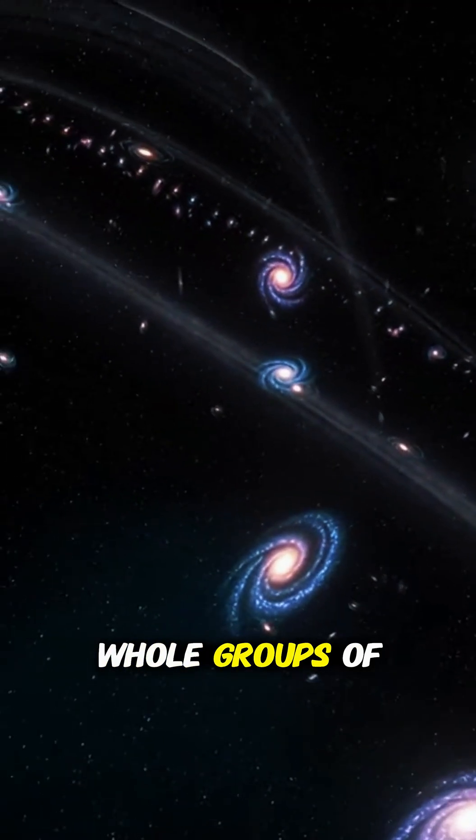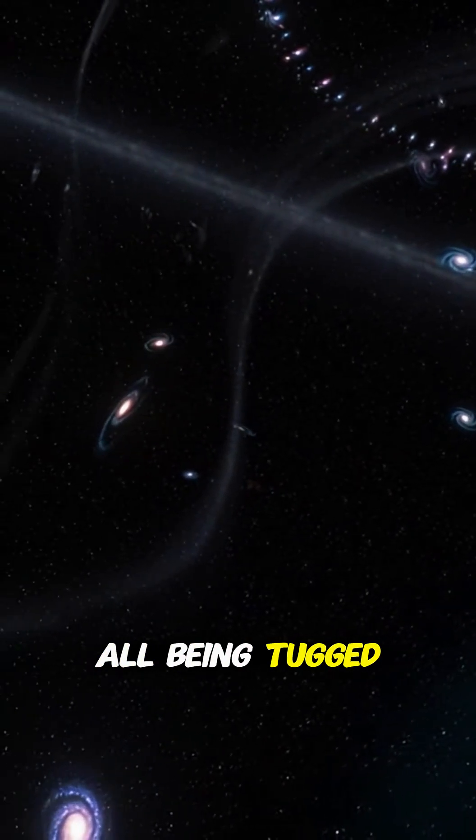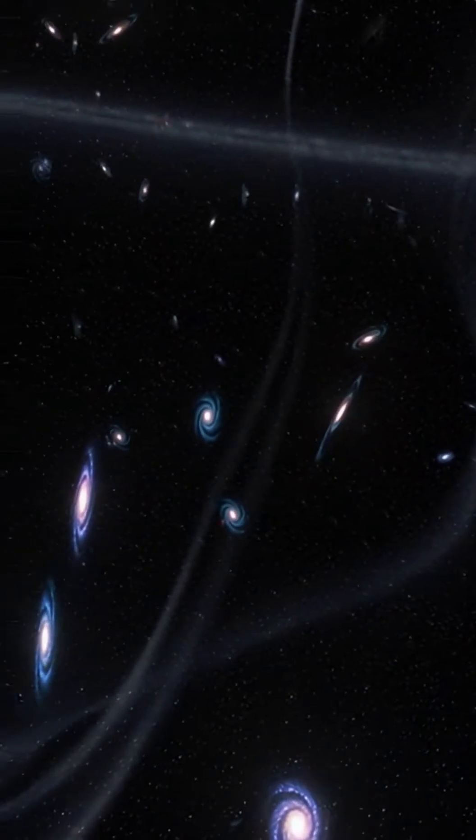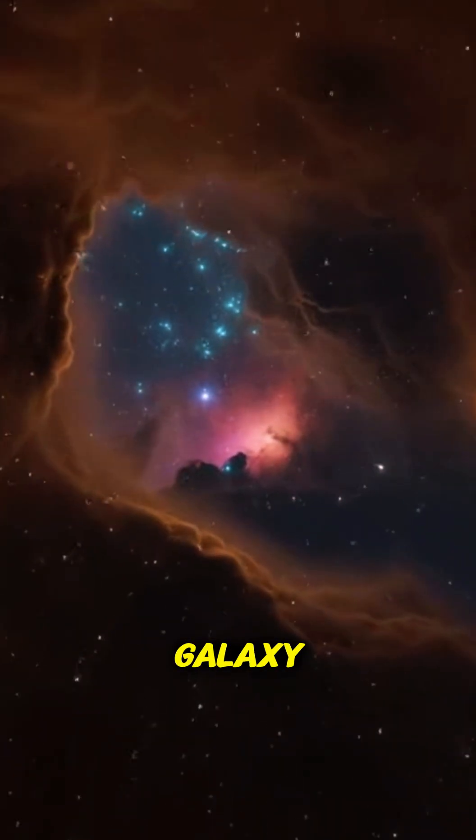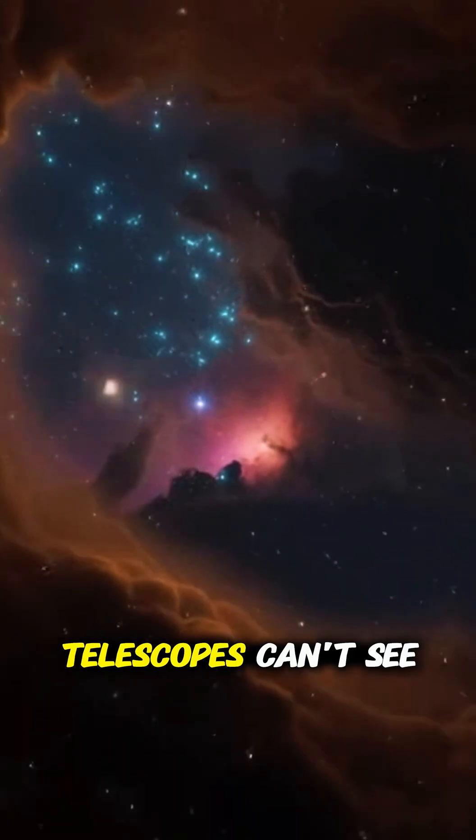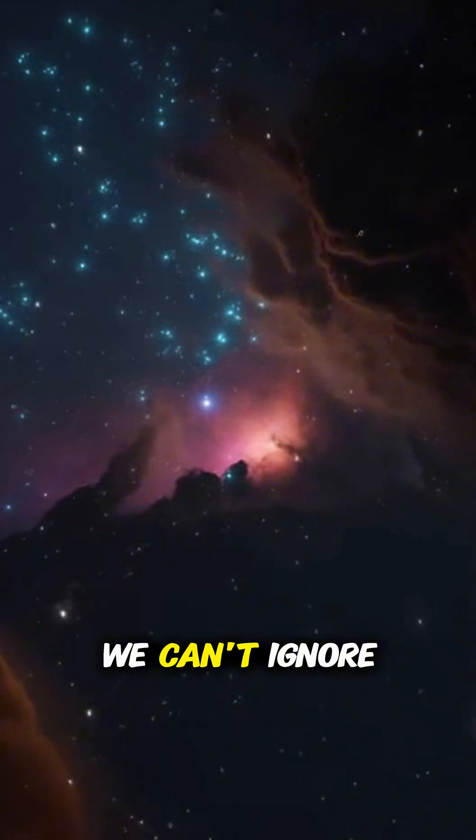Astronomers noticed whole groups of galaxies drifting in the same direction, all being tugged by a hidden force. The great attractor sits behind thick curtains of dust in our own galaxy, a region our telescopes can't see clearly, yet its gravity leaves a trail we can't ignore.